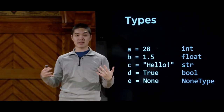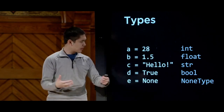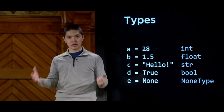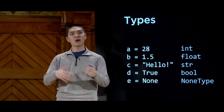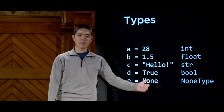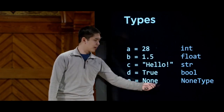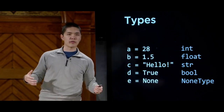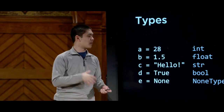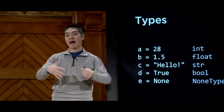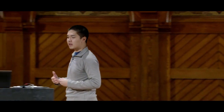Python has several built-in types: an integer like 28 is of type int; a decimal number like 1.5 is a float; text wrapped in single or double quotation marks is of type str, short for string. Boolean values—true or false—are represented with a capital T True and capital F False, of type bool. There's also a special type called NoneType, whose only value is capital-N None, used to represent the absence of a value.